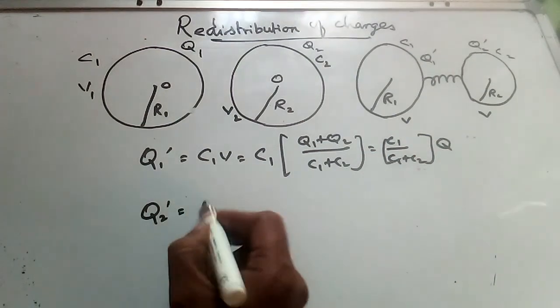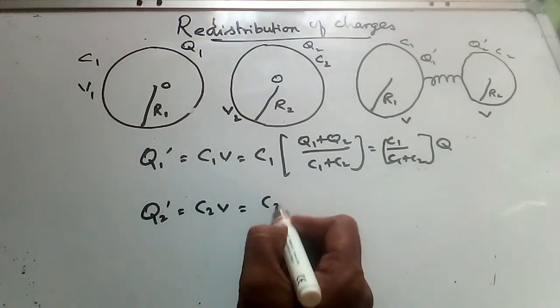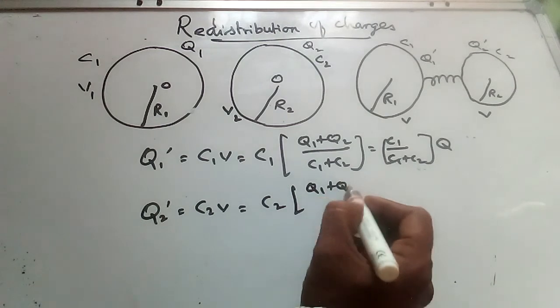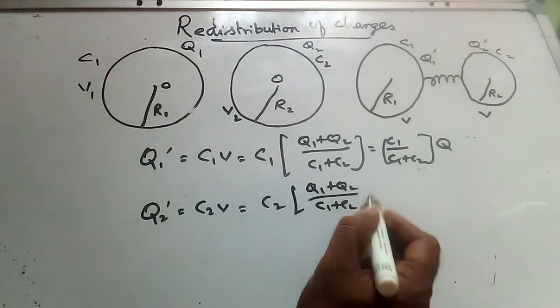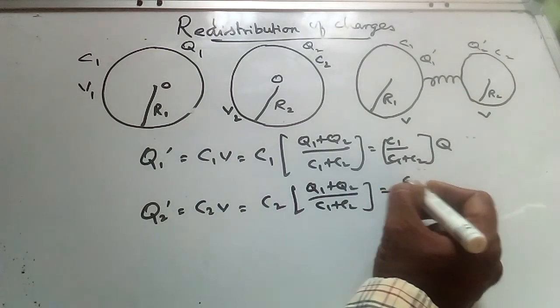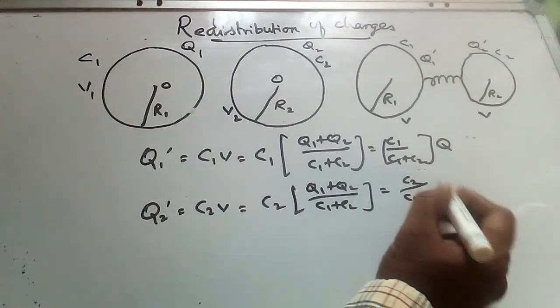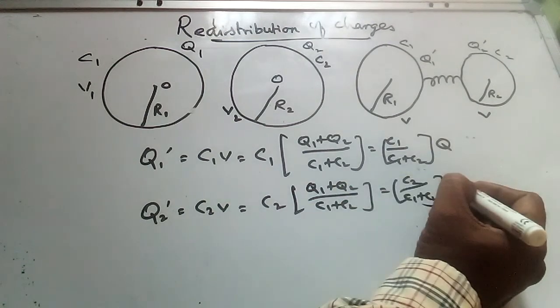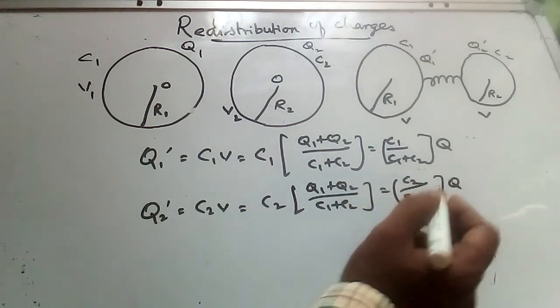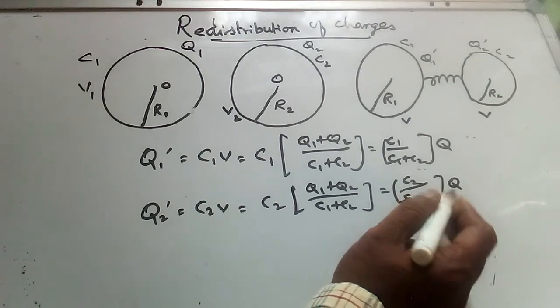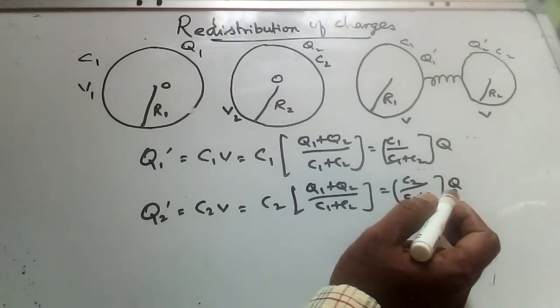Q2 dash equal to C2V. So C2 into Q1 plus Q2 by C1 plus C2. Then C2 by C1 plus C2. Since Q1 plus Q2 equal to Q, so C2 by C1 plus C2 into Q. Q is total charge on the system.